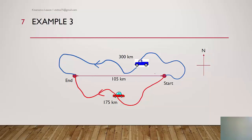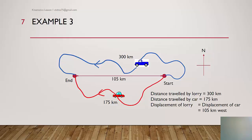Consider two vehicles: a lorry travels a distance of 300 kilometers, and a car travels 175 kilometers. The distance traveled by the lorry is 300 km and by the car is 175 km. However, the displacement for both is actually the same, because displacement compares only the start and end positions. Despite traveling different routes, the displacement of both the car and the lorry is 105 kilometers west.